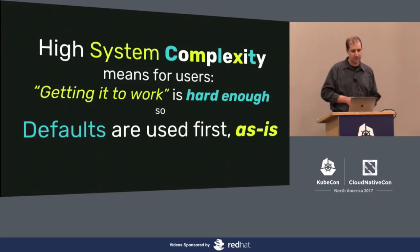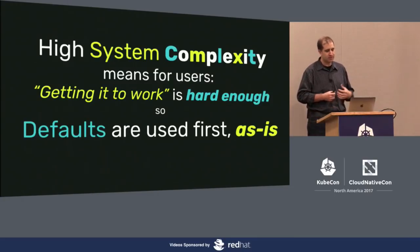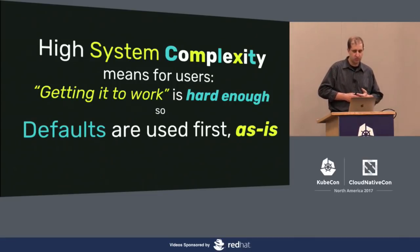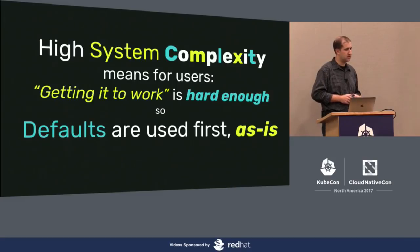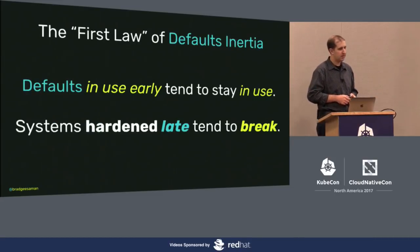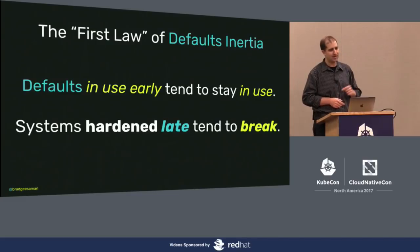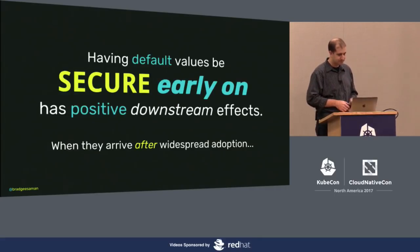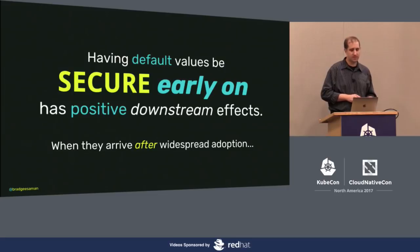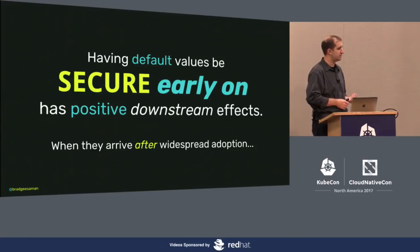Like Morpheus, I'm beginning to believe that high system complexity means for users new to the project, getting it to work from an operator's perspective is hard enough. It's such a wide range of new terminology and tools that most people use the defaults the first time through — they probably know better than me, just accept the defaults. But defaults tend to have inertia. Defaults in use early tend to stay in use, and systems hardened late tend to break. That's what I kept running into as I went through all the clusters.